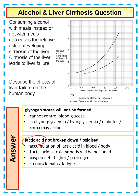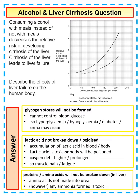Remember the liver breaks down lactic acid, so if we increase the amount of lactic acid in the blood that can be toxic to the body and cause things like muscle fatigue and muscle pain. Remember that amino acids are broken down in the liver, so if you've got liver cirrhosis you're not making urea, and ammonia can be formed instead, which is toxic.